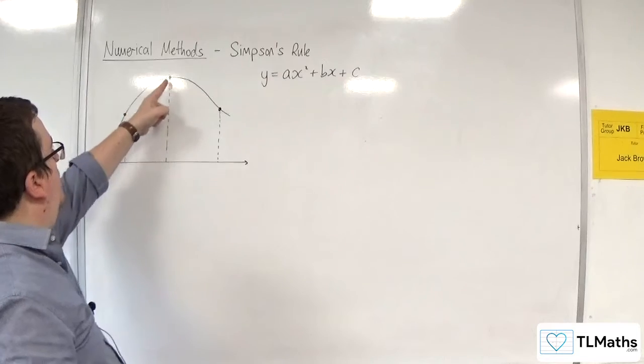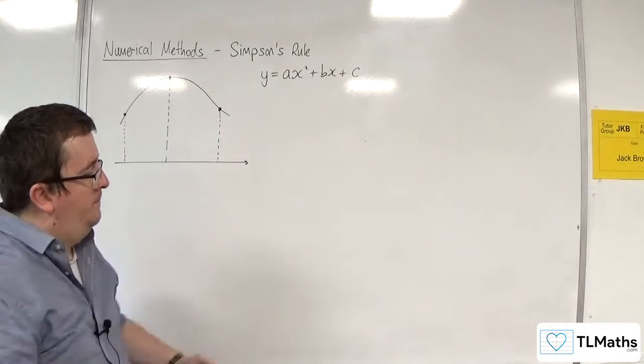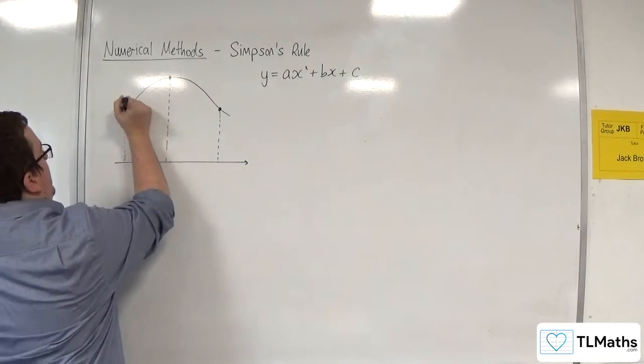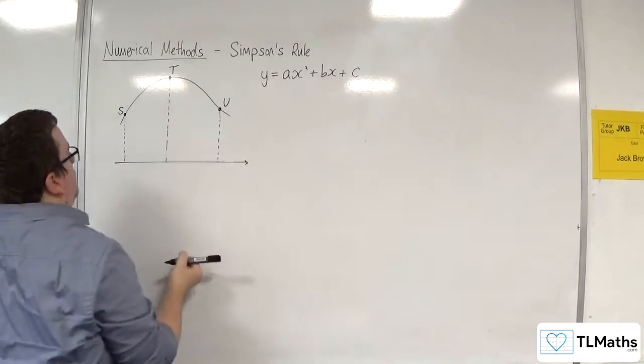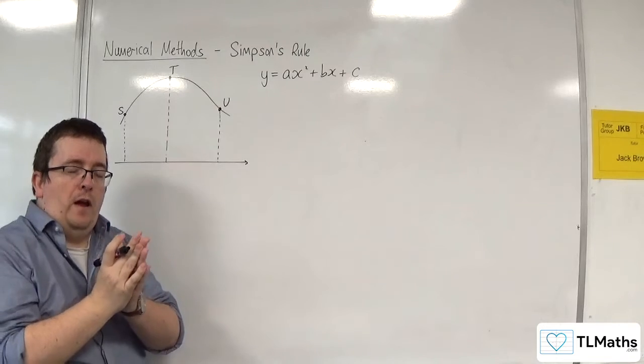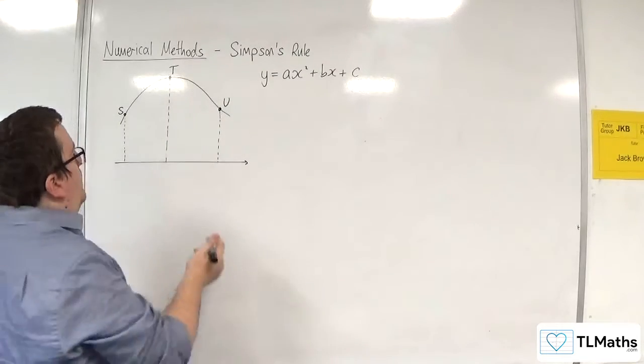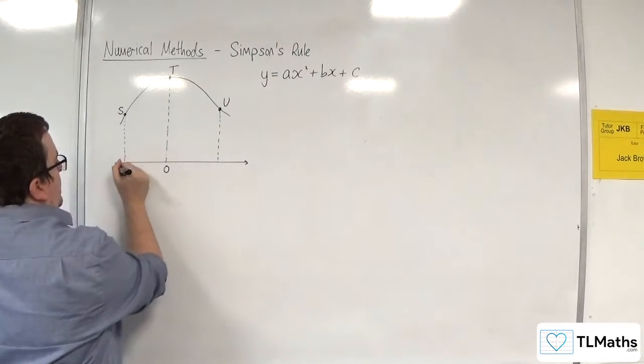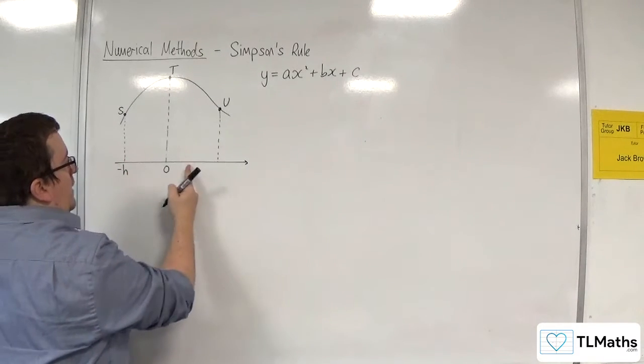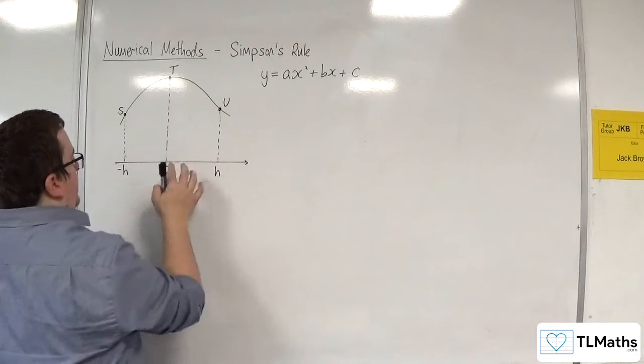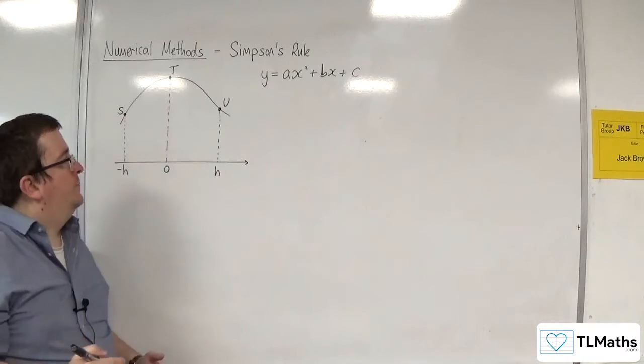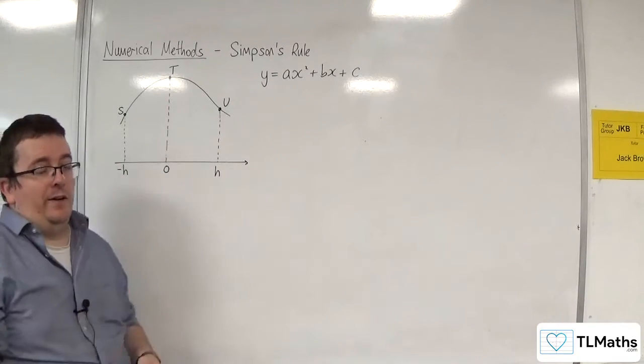In order to work out the a, b, and c for the curve that goes through those three points, you need three bits of information. So I need three points. One, two, three. So I'm going to call these three points s, t, and u. And I'm going to, for ease of notation, say that this is at the origin, and this is of width h, and this is of width h. So the same width, and they are h either side of the origin.